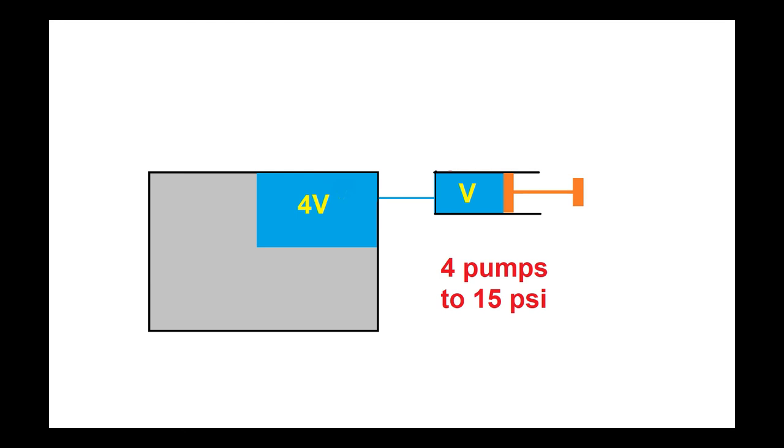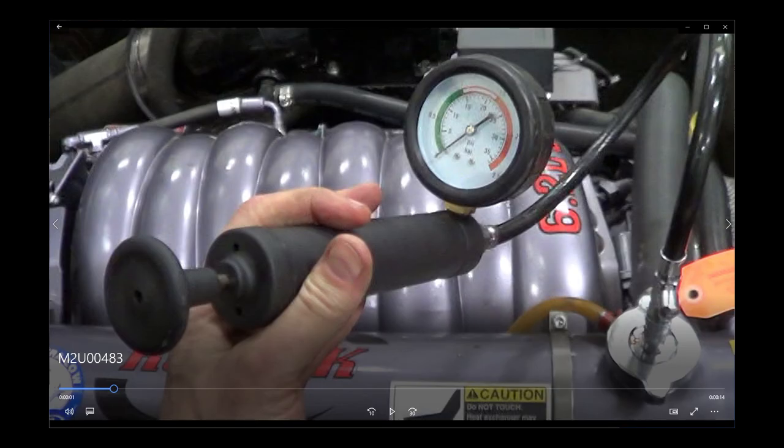So if you pump in a gallon of air to double the pressure, then that means there was a gallon of air in the system in the first place. You could just eyeball your pump and say that pump looks like about a cup of air per pump, or you could actually measure it and be more precise.